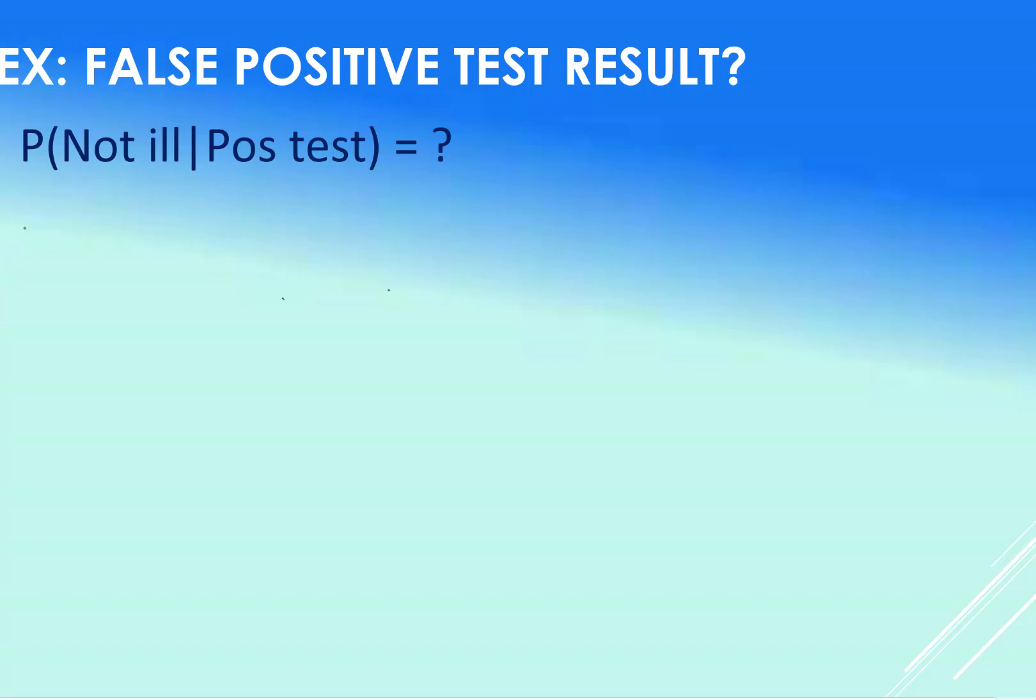So this would be this positive test result, which would scare you for sure. So this is the, you're not actually ill, but you get given a positive test result. It's called your false positive. Okay, so let's have a look here. So you do your not ill and positive divided by the odds of positive.